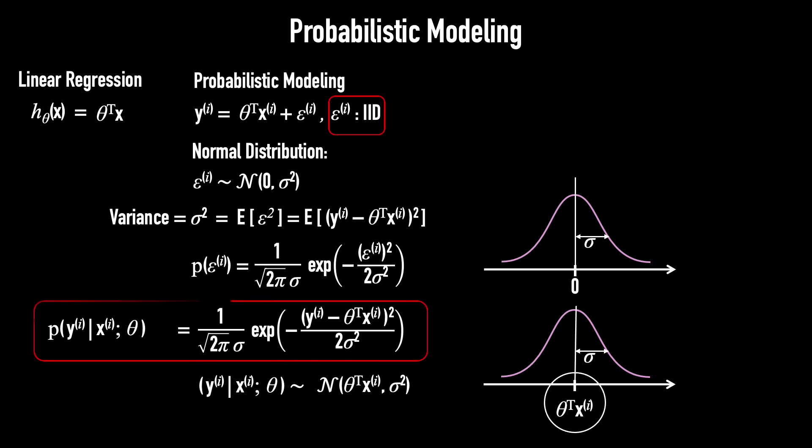Now, let's look at this formula. We call this term the probability of the data under our model. Another name is the likelihood, which we'll explore in more detail next.